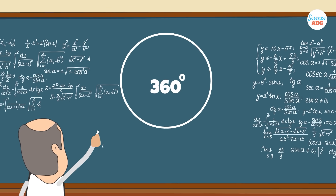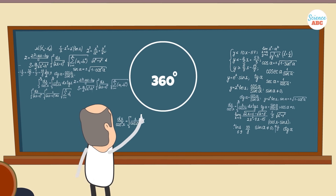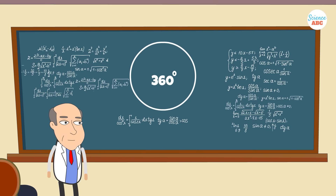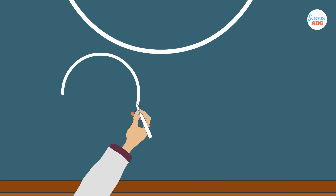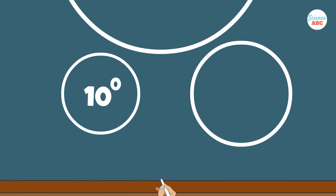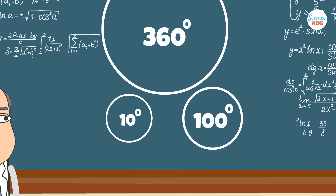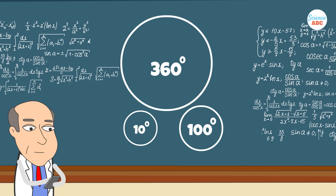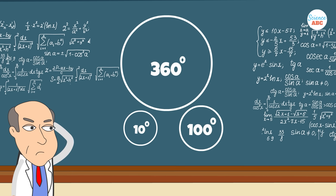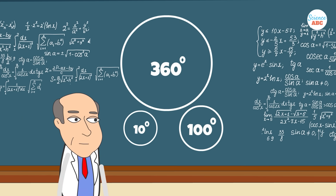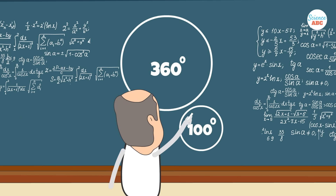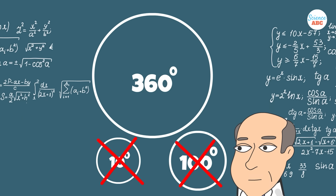If you're one of those humans who loves math, a question that has likely nagged you at some point is why a circle is composed of 360 degrees. Why not something simpler, like 10 degrees or 100 degrees? All the calculations would have been so simple. Wouldn't that be more convenient? Believe it or not, 360 is actually the ideal solution. A number like 10 or 100 would have been more inconvenient mathematically speaking.